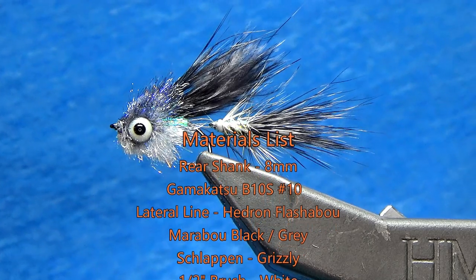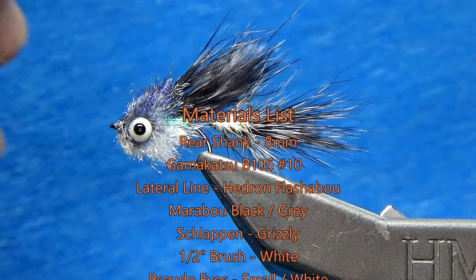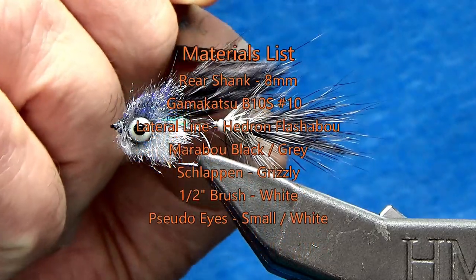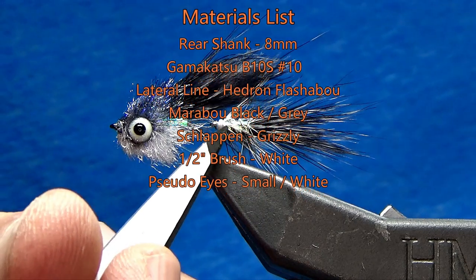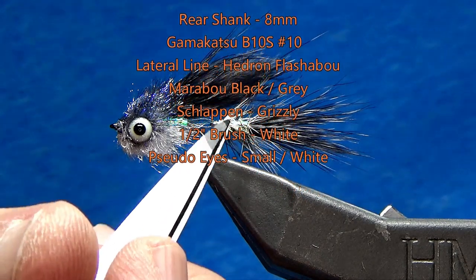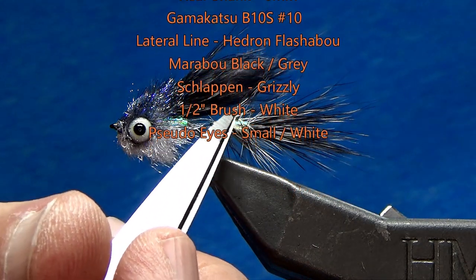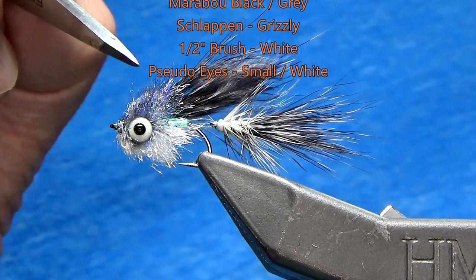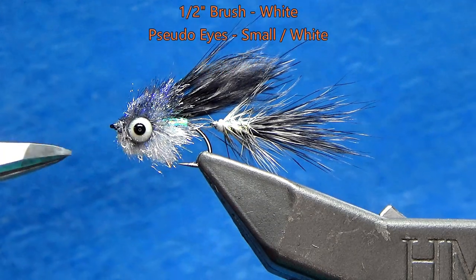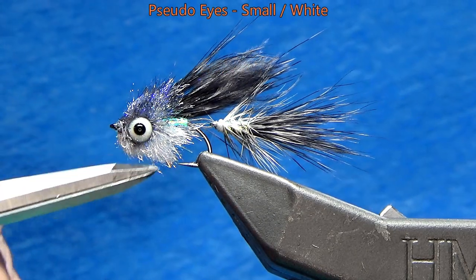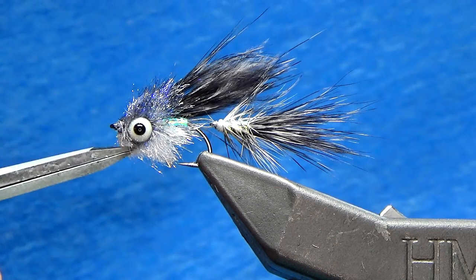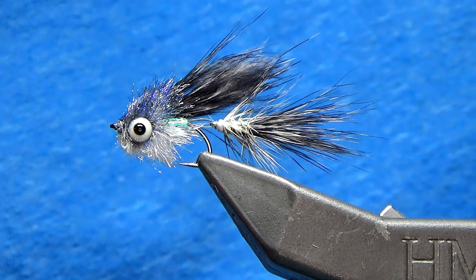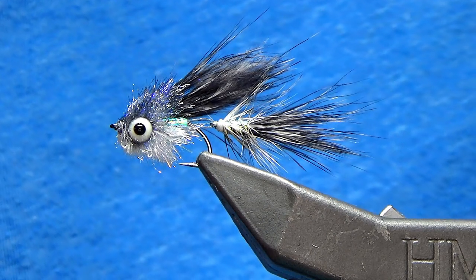The materials that make up this fly are extremely simple. I basically have barbed marabou out the back for the tail, also for the wing and then I use a Grizzly Schlappen and then for the lateral line both on the back and on the B10S I'm using a lateral scale from Hedron Flashabou. As we move up front I've got a half inch brush in white and then some small pseudo eyes. So, without further ado, let's get tying.